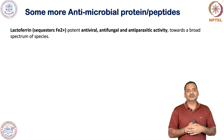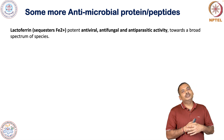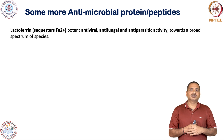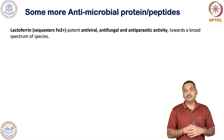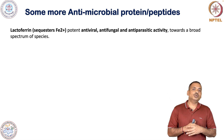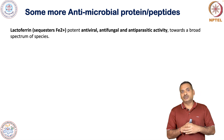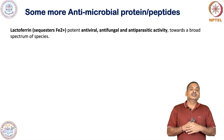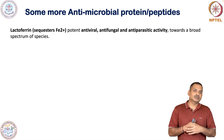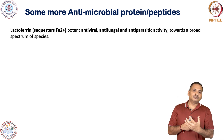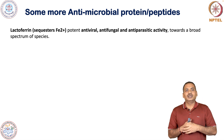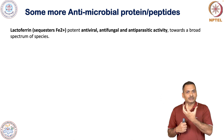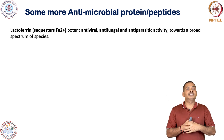Lactoferrin is a protein predominant in breast milk. The key role of lactoferrin is to sequester iron. It is quite potent against viruses — it has antiviral activity — as well as antifungal and antiparasitic activity. Lactoferrin sequesters iron from microbial pathogens, and once the iron is sequestered, the activity of the pathogens is significantly reduced.